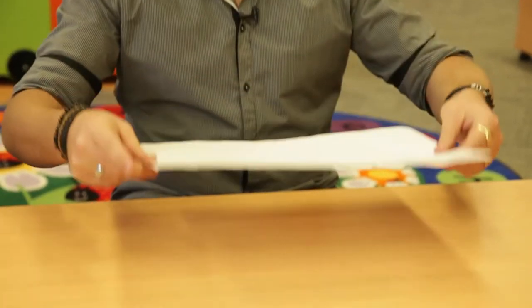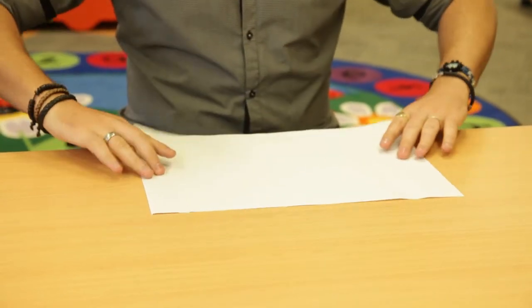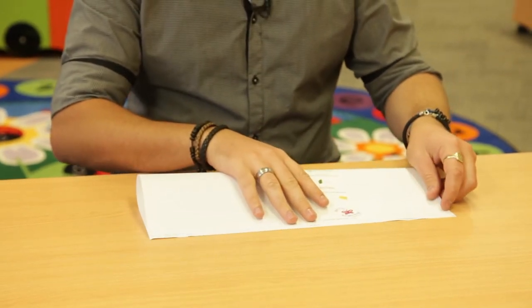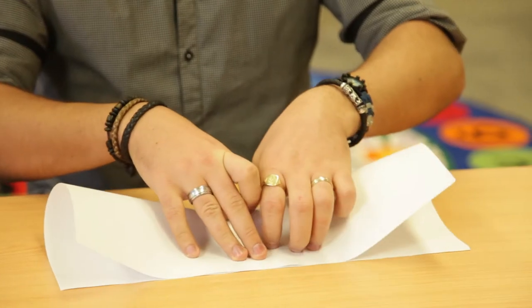The first step is to pick up the piece of paper and turn it over. You'll then fold it lengthways, matching your corners and folding along the dotted line.